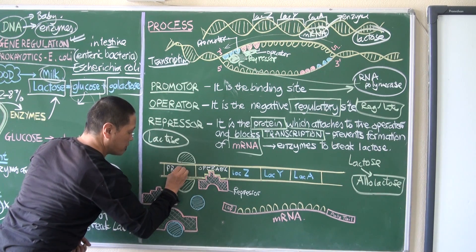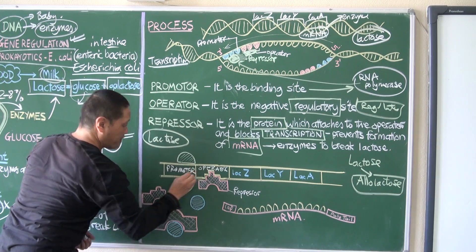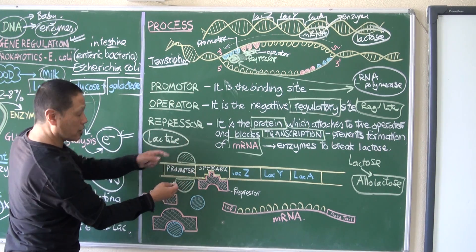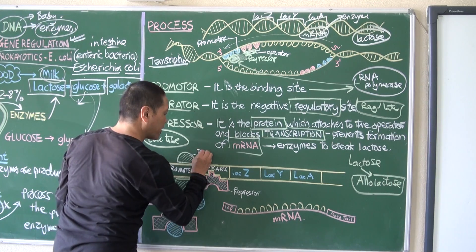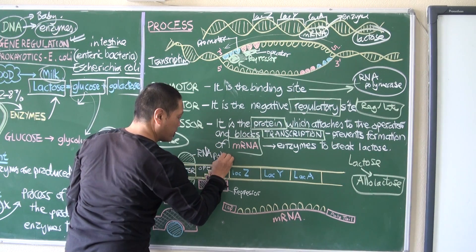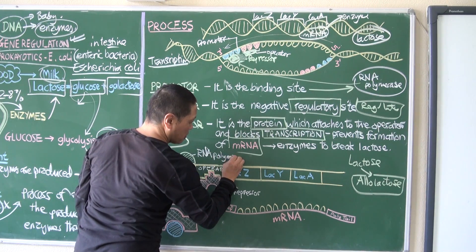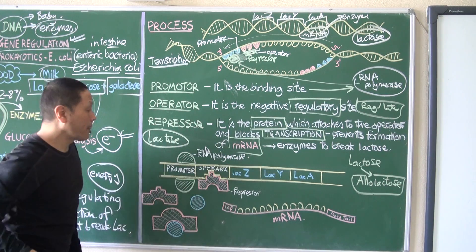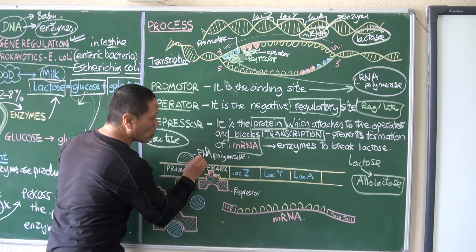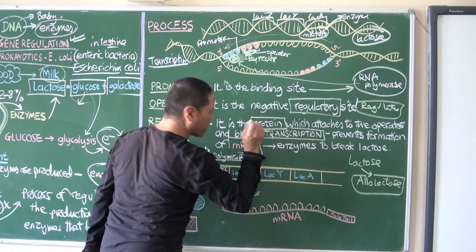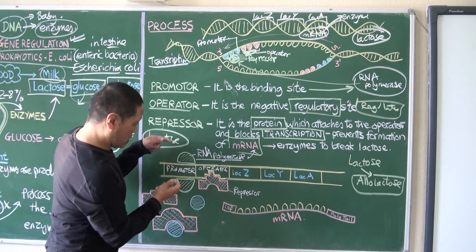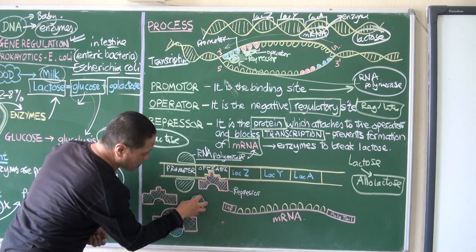This is the repressor, this is the operator. This green structure is your RNA polymerase - this is the one that actually produces mRNA. But at this point, when this repressor is here, RNA polymerase cannot produce an mRNA, it cannot copy this segment.